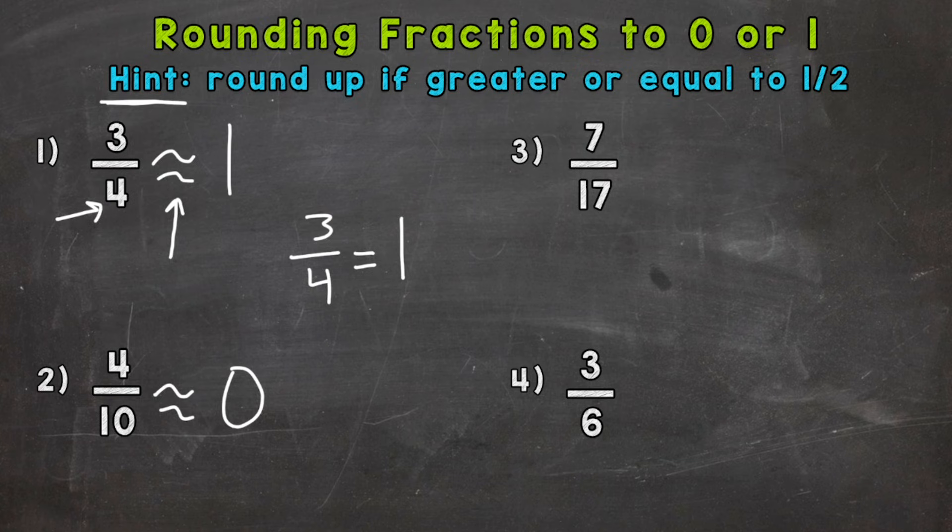Number 3, 7 seventeenths. So here we have an odd number denominator. So we need to think about what half of 17 is, and then is this number greater than that half or less than, or maybe equal to? So half of 17 is 8 and a half. So let's take a look at our numerator 7. Is that greater or less than 8 and a half? Well, it's less than. So 7 seventeenths rounds to 0. It's closer to 0 than it is to 1 whole.